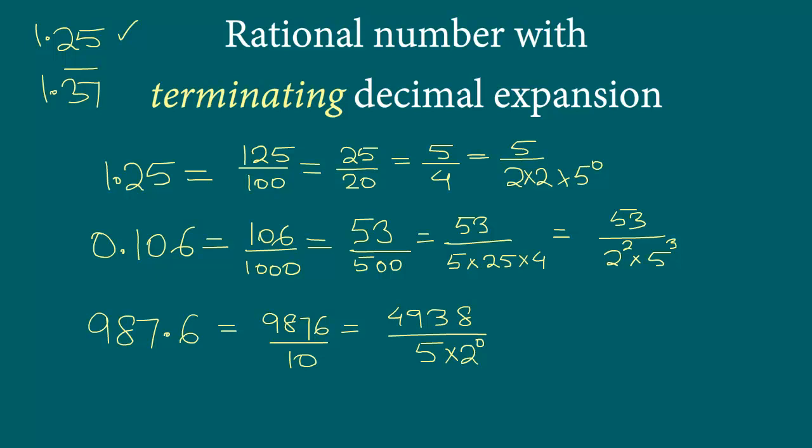The numerator can be anything, but the denominator always will have only prime factors 2 and 5, and they will be raised to powers, let's call it a and b, where a and b can be non-negative integers, meaning they can be 0 or 1, 2, 3, 4, and same is true for b. No matter what kind of decimal number we pick, as long as it is a terminating decimal number, the denominator will always be of this form.